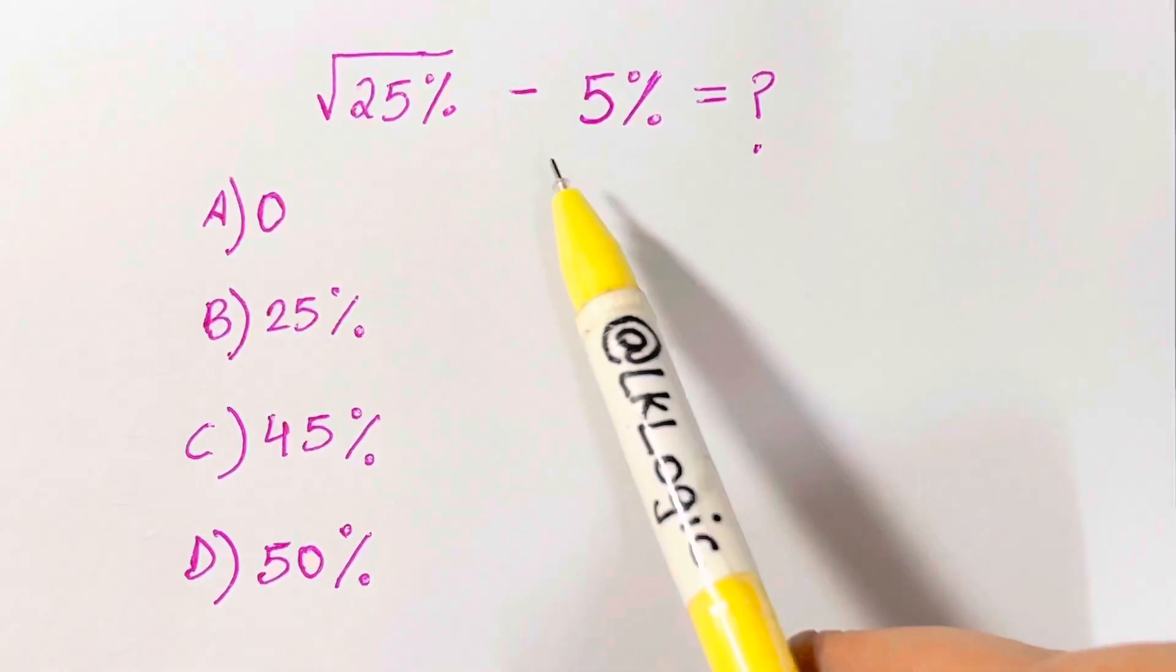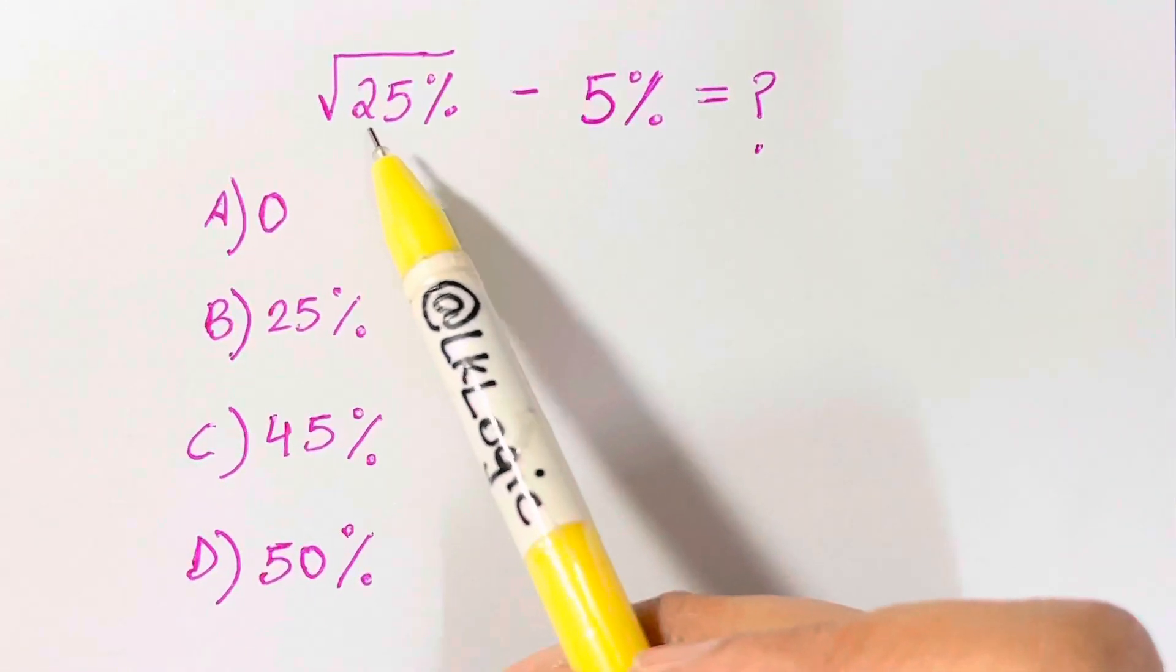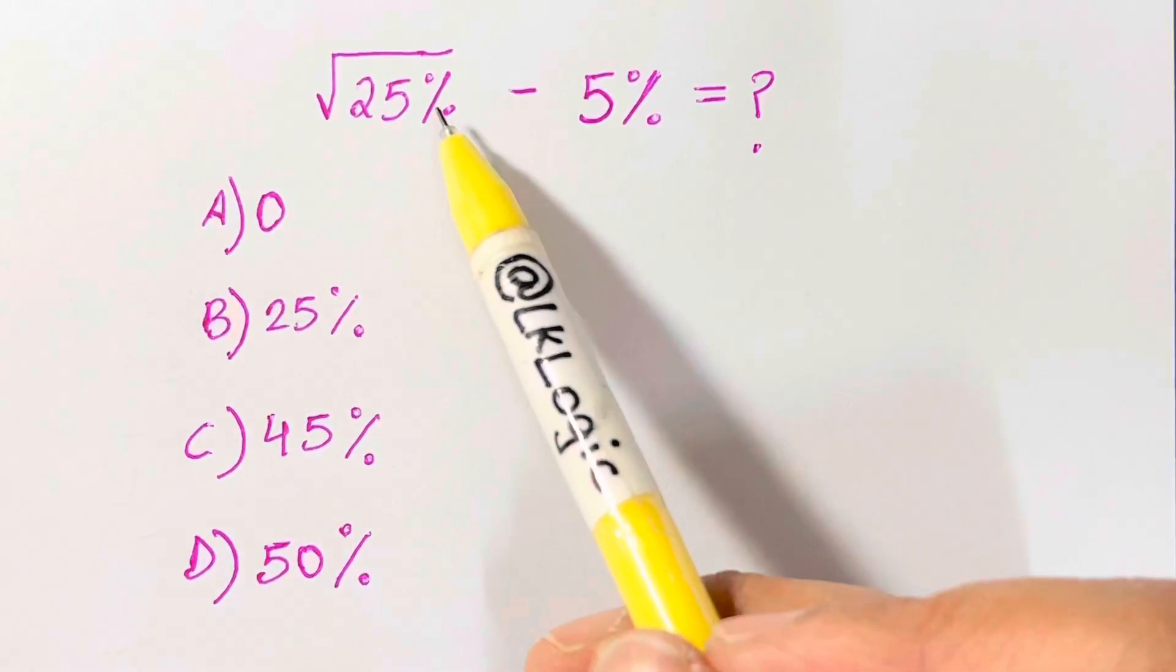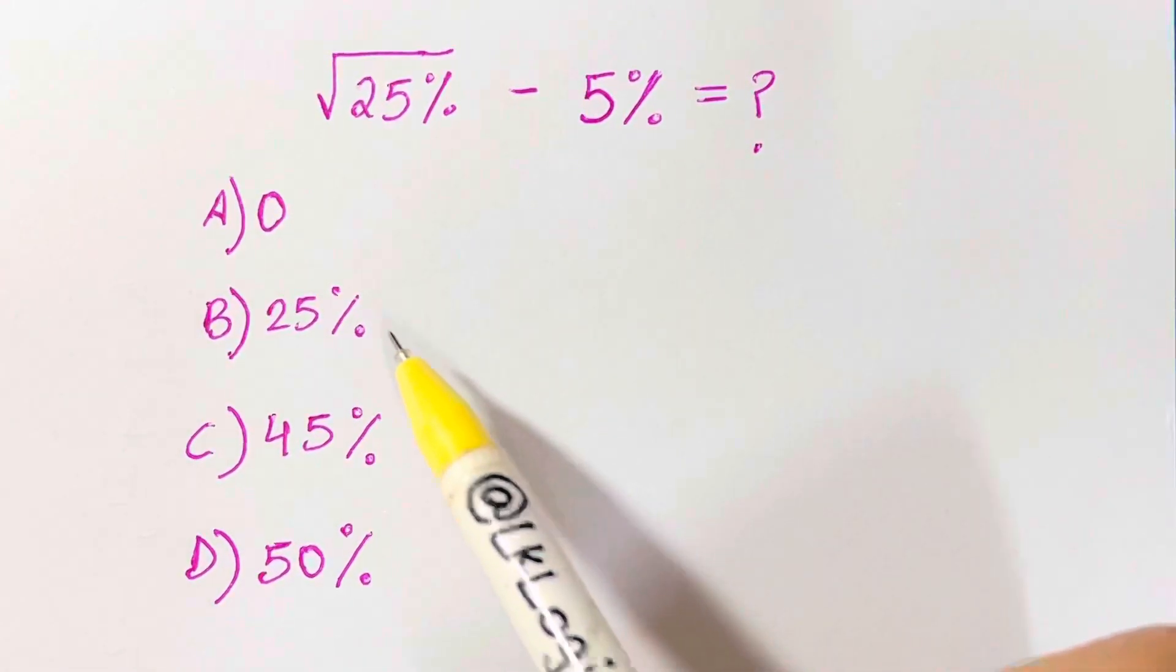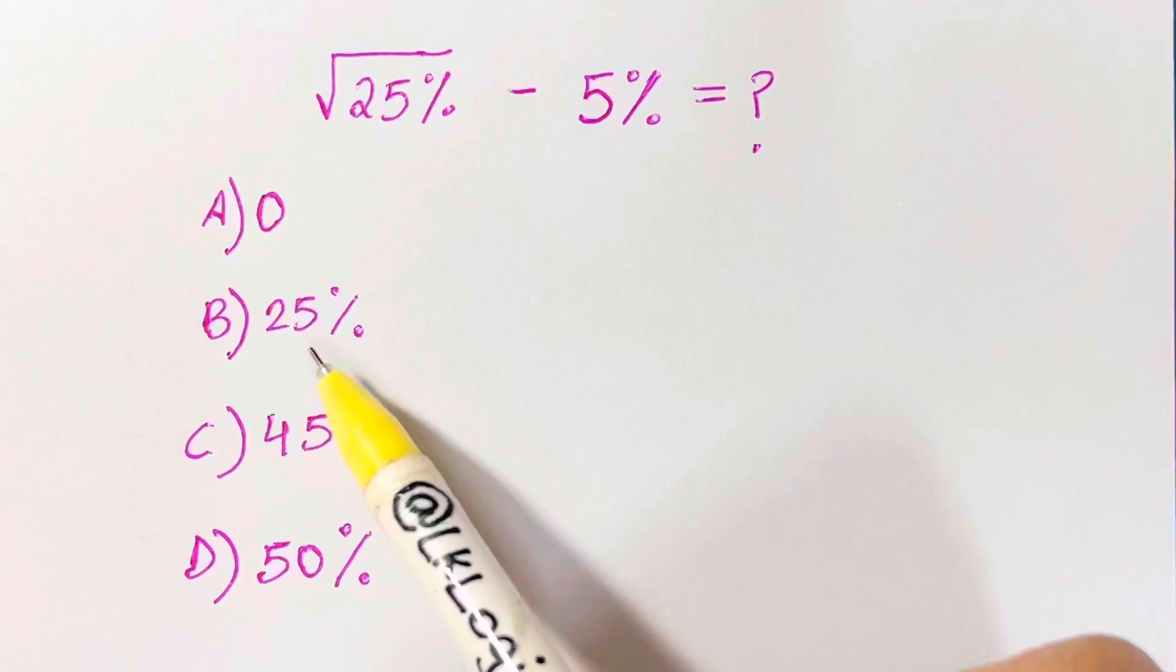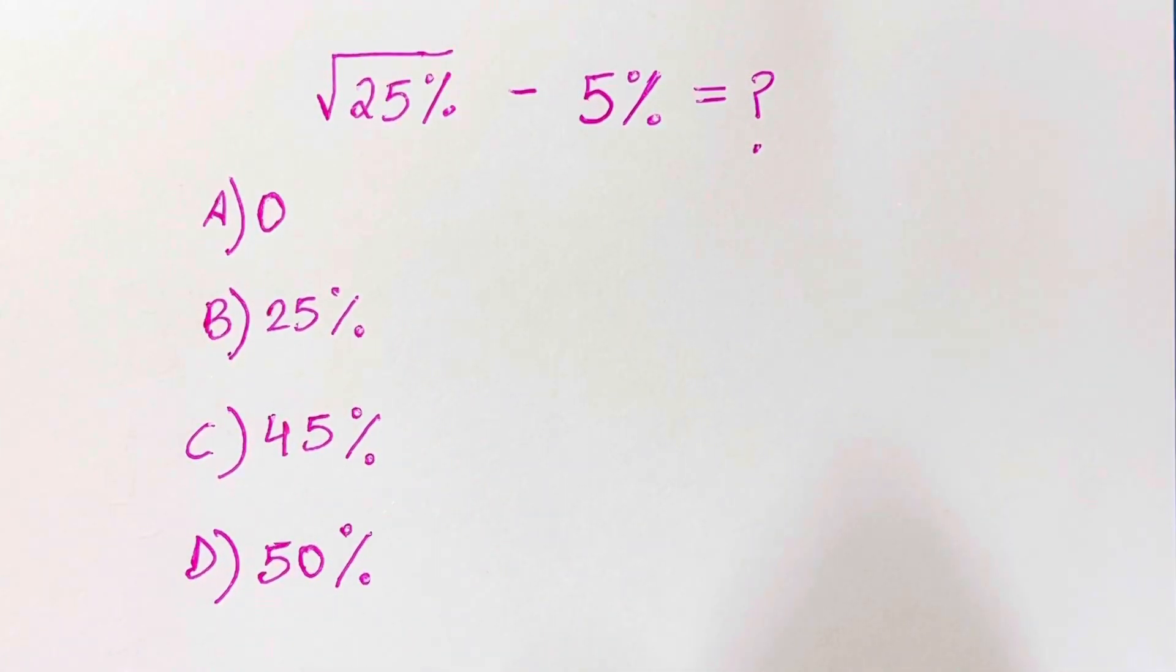Hi guys, I've got a nice percentage problem for you. Let's see how we calculate square root of 25% minus 5%. You have four choices: zero, 25%, 45%, and 50%. So what's the answer?